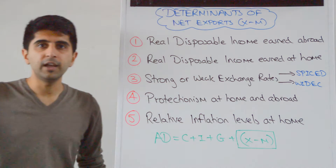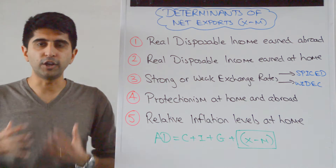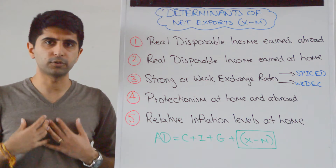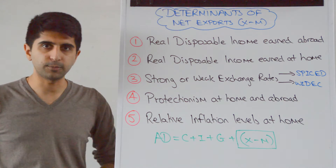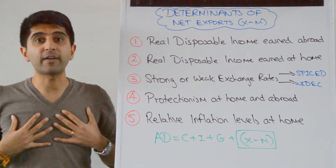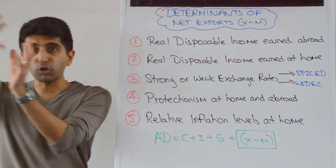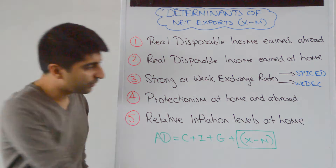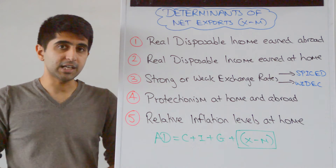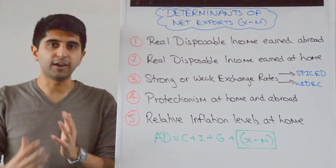Protectionism at home and abroad, of course. So if there is strong protectionism abroad — maybe tariffs on UK exports, quotas on UK exports, maybe even sanctions or embargoes or non-tariff barriers — that might prevent us from being able to access international markets with our exports and will reduce the amount of export revenue we can generate. If there is very low levels of protectionism abroad, it might be easier for us to access international markets, sell exports, and earn revenues.